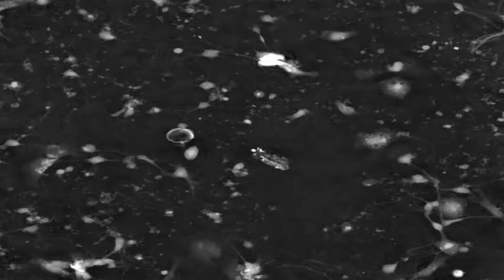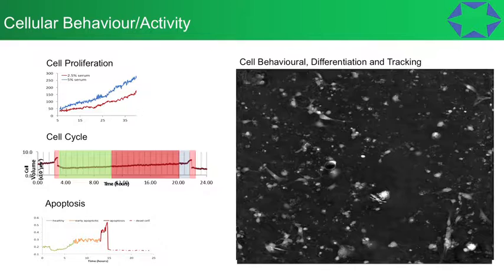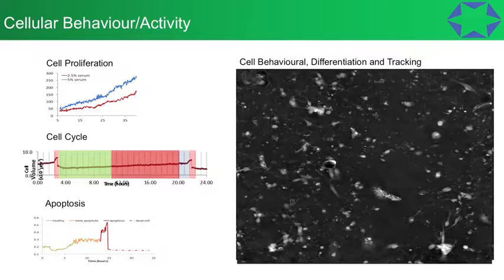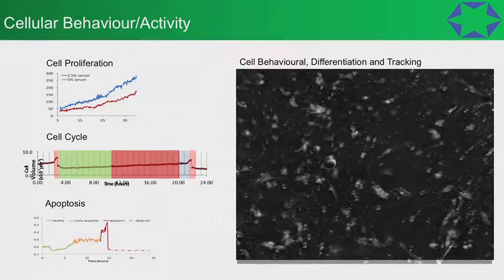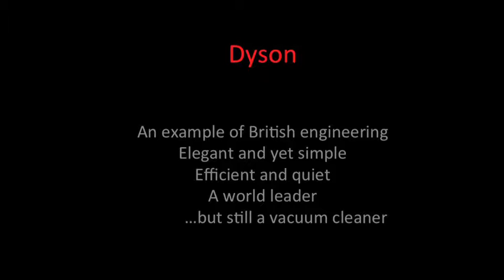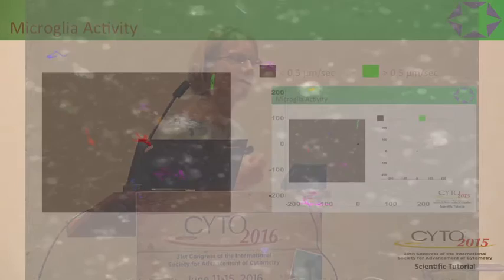Its twin has now divided too and is eating an air bubble — it's going to have wind later! But those were twins and they had very different characteristics. You really need to think that after cells divide they're not absolutely identical — they might go on to do slightly different things. We named that cell Dyson because it hoovered up the mess. For those familiar with a Dyson, it's British engineering: elegant, simple, efficient, and quiet — a world leader, but still a vacuum cleaner.